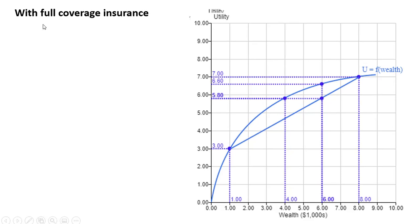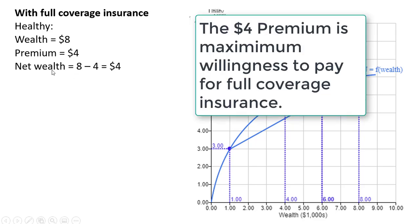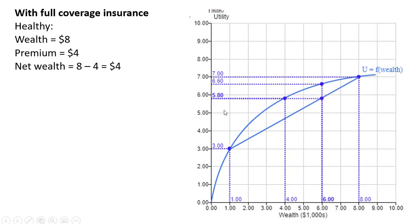So with full coverage insurance, if the person is healthy, they have a wealth of $8, they pay a premium of $4, they have a net wealth here of $4, guaranteeing them a utility of 5.8.